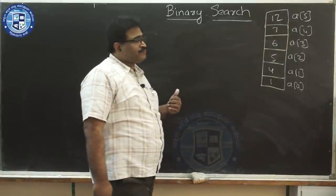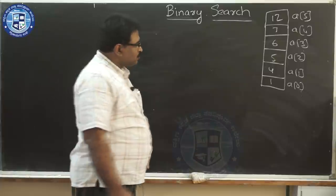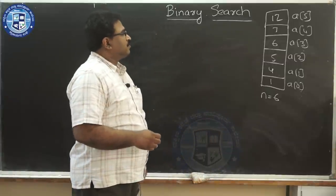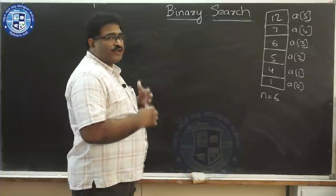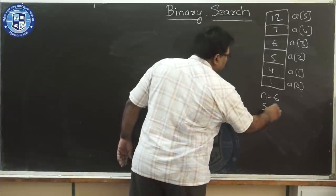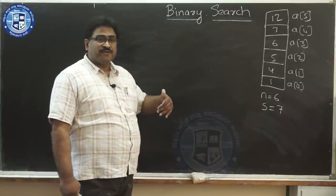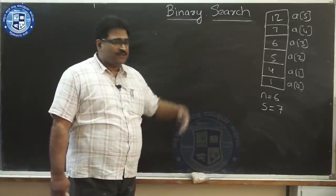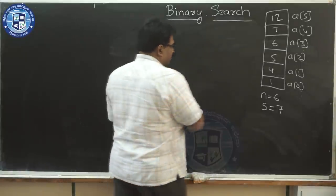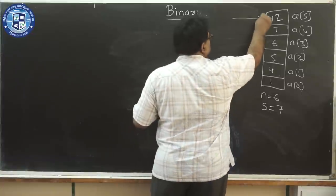In this example, we have six elements, so the value of n is 6. Suppose we are searching for the value 7 — whether it exists and what its position is. The first thing I need is two pointer variables: f for first and l for last. Different textbooks use different names, but the idea is that f starts at 0 and l goes to n minus 1.